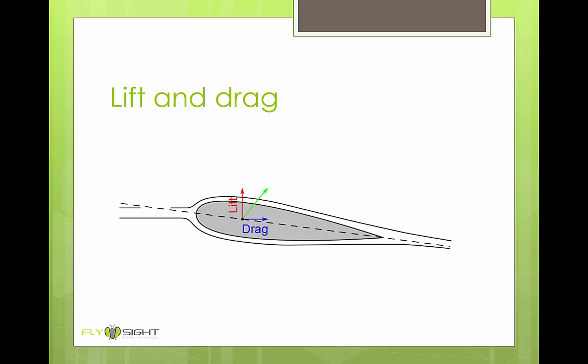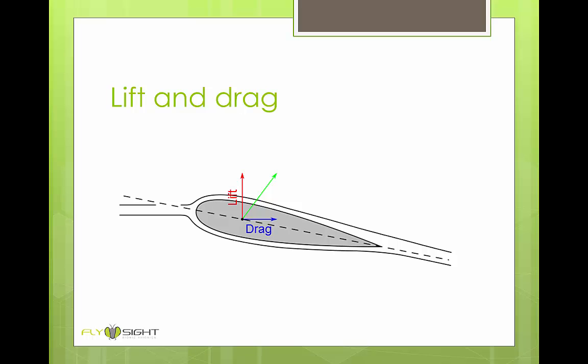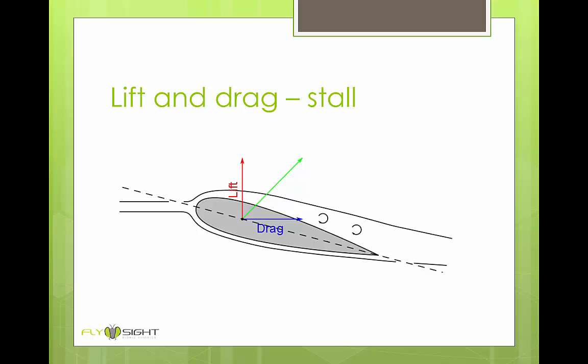If we increase the angle of attack a little more, then again we see another increase in lift and a small increase in drag. This trend continues until the wing stalls. When the wing stalls, the air stops flowing smoothly over the top of the wing. Lift starts to drop off, and the drag increases quickly.